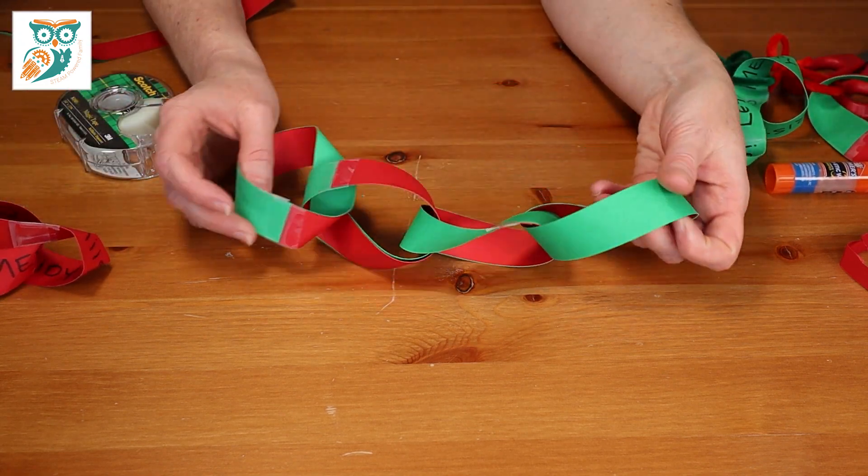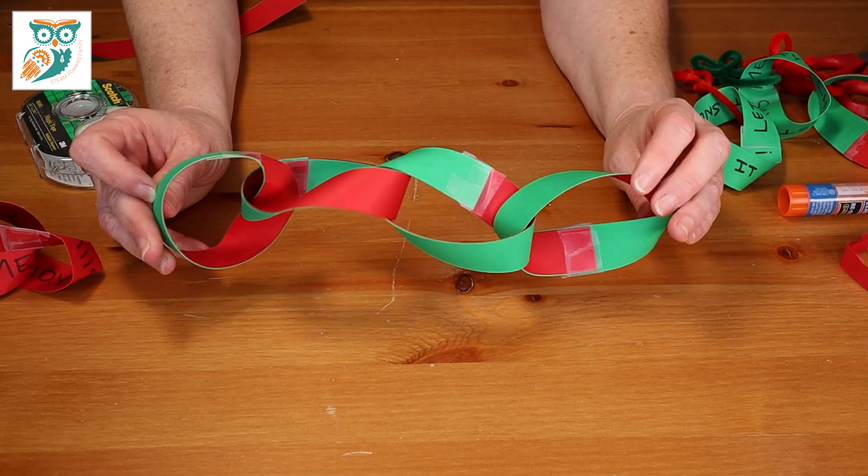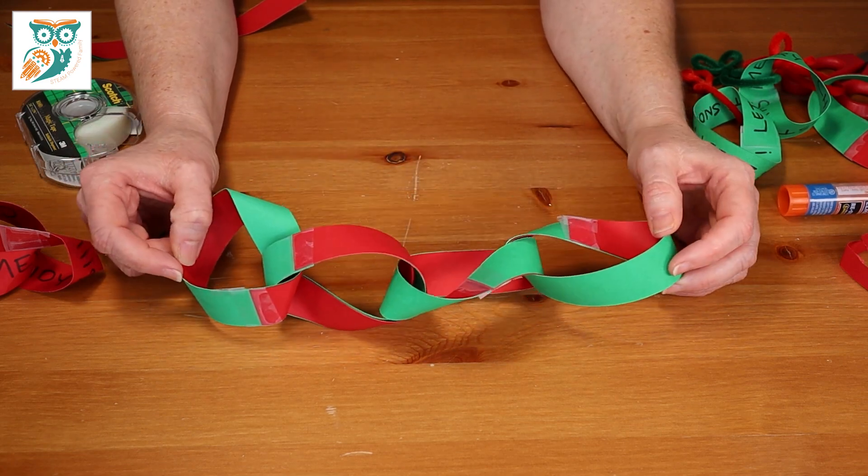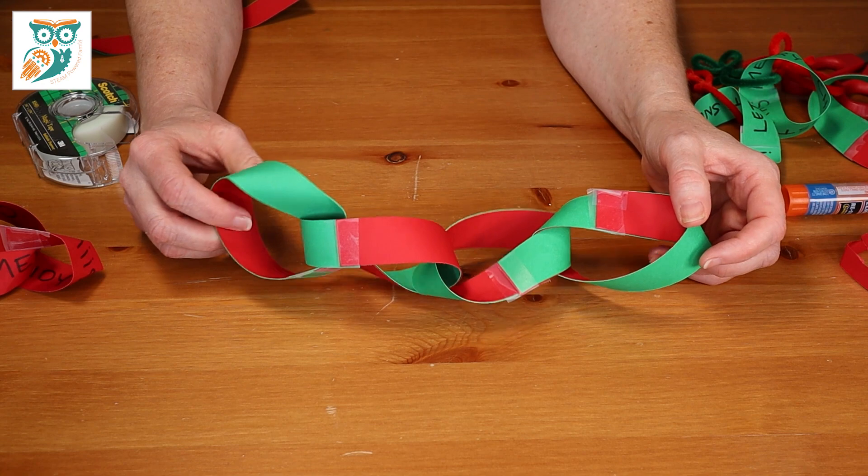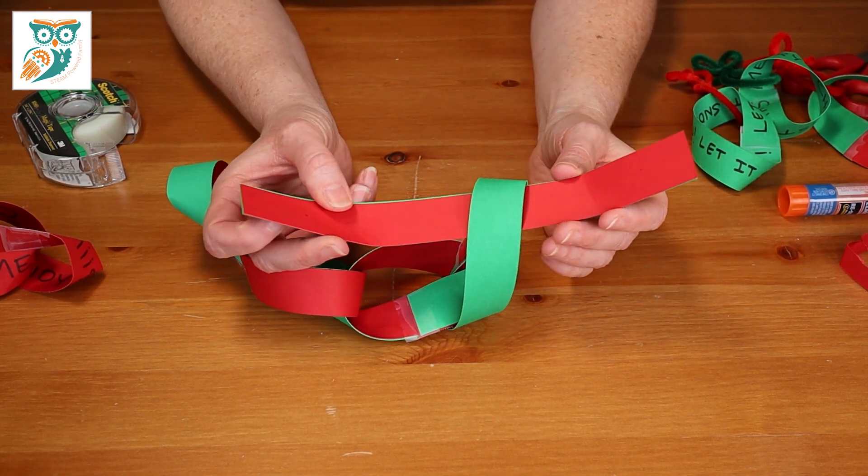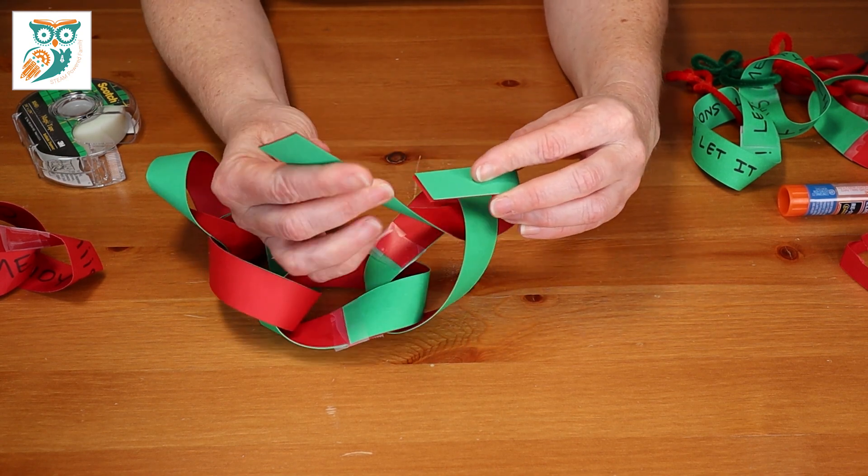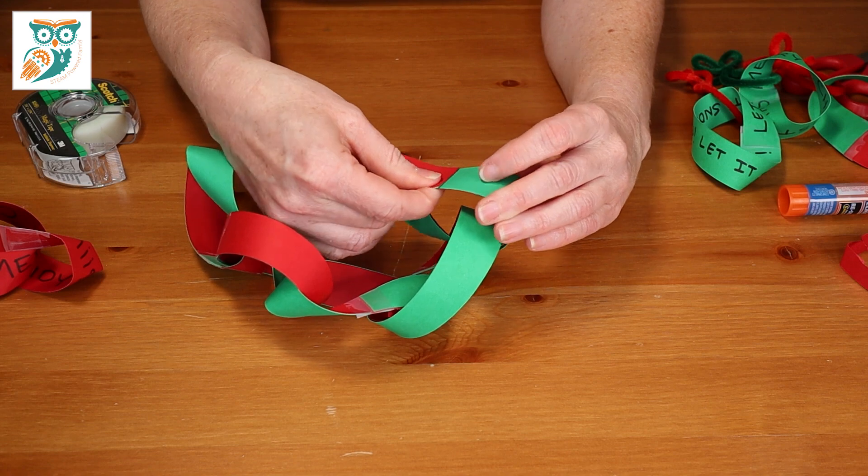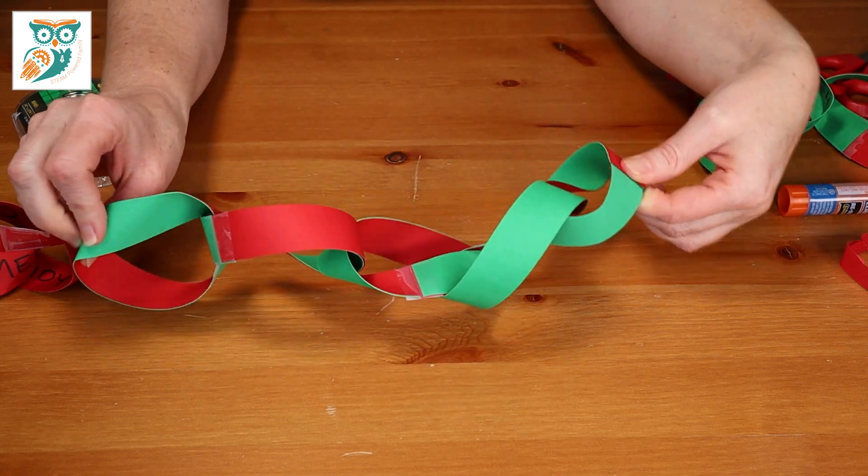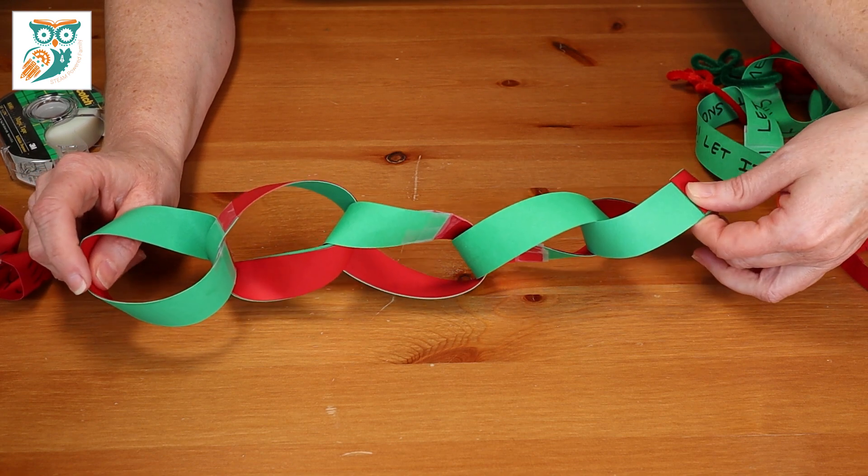Now, another idea we had was to make Mobius Strip garland. So here we've got two colors. So we've got our red and our green and we're just looping them all together. And all you do is take your strips of paper. Once you've glued them together, put them through, do your flip, and then tape that together. And then you've got another link on your Mobius Strip. And you can just keep it going and going and going until you've got it as big as you want.